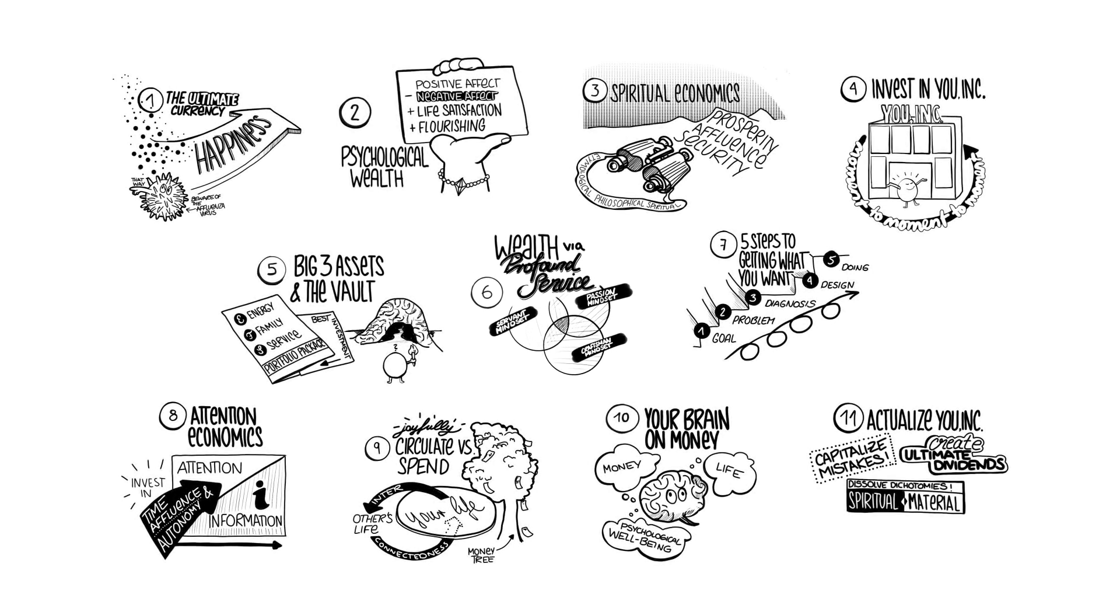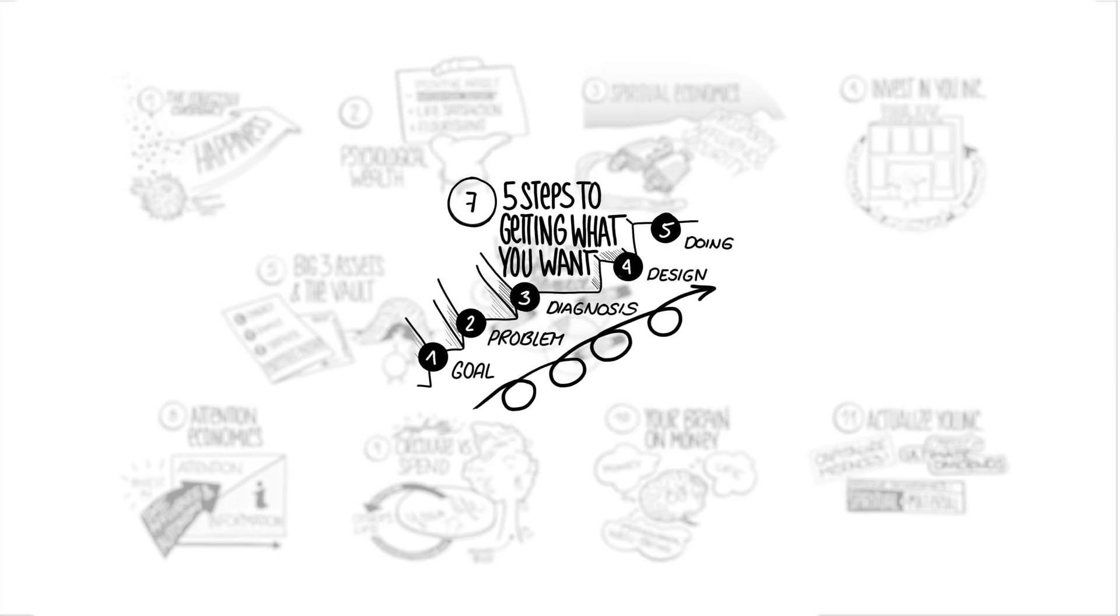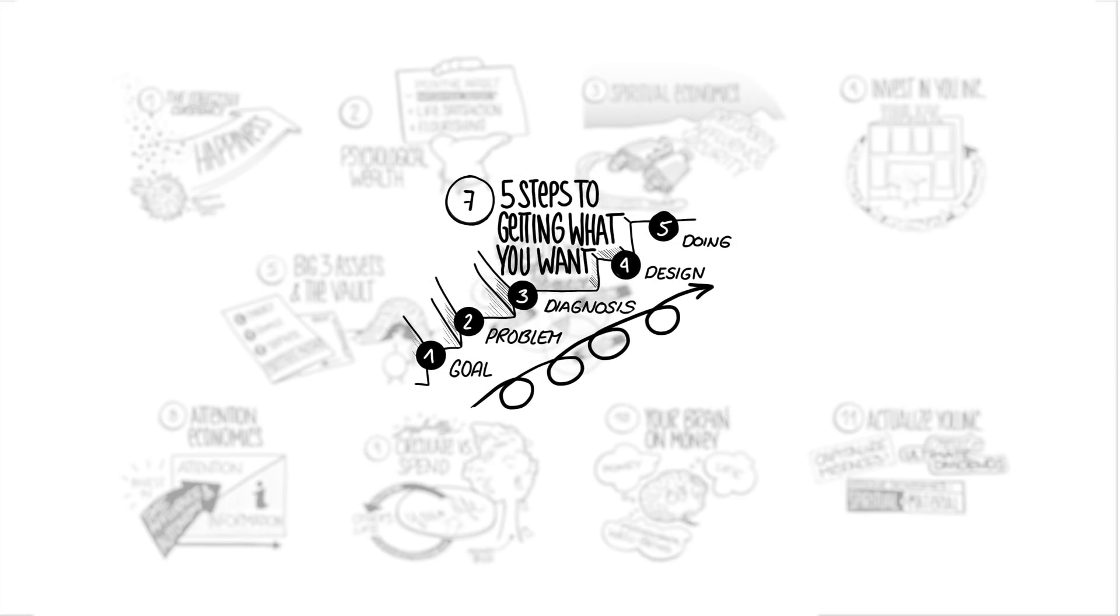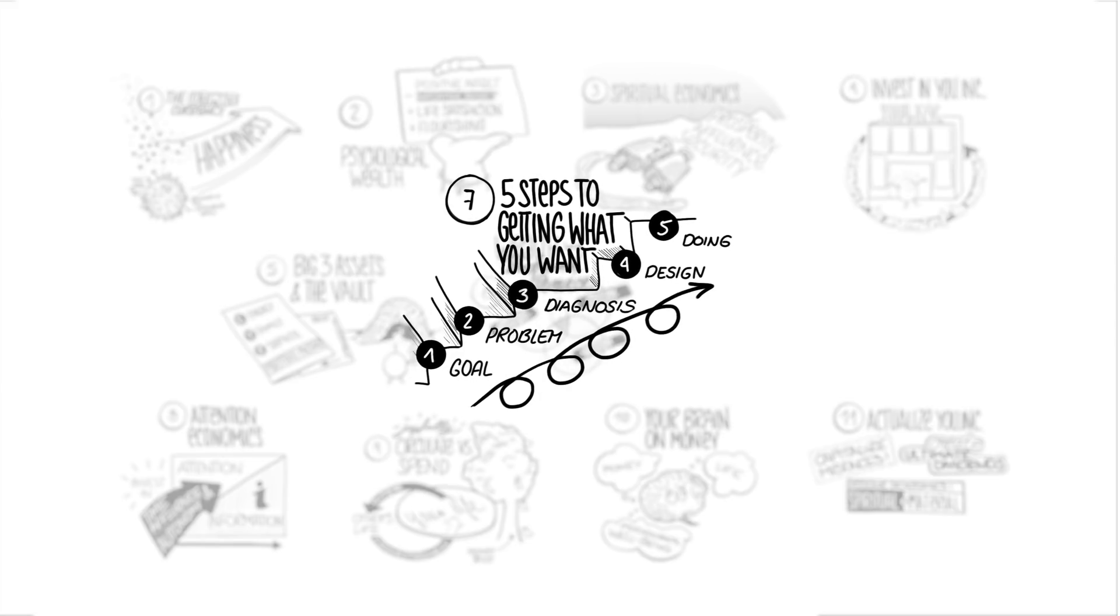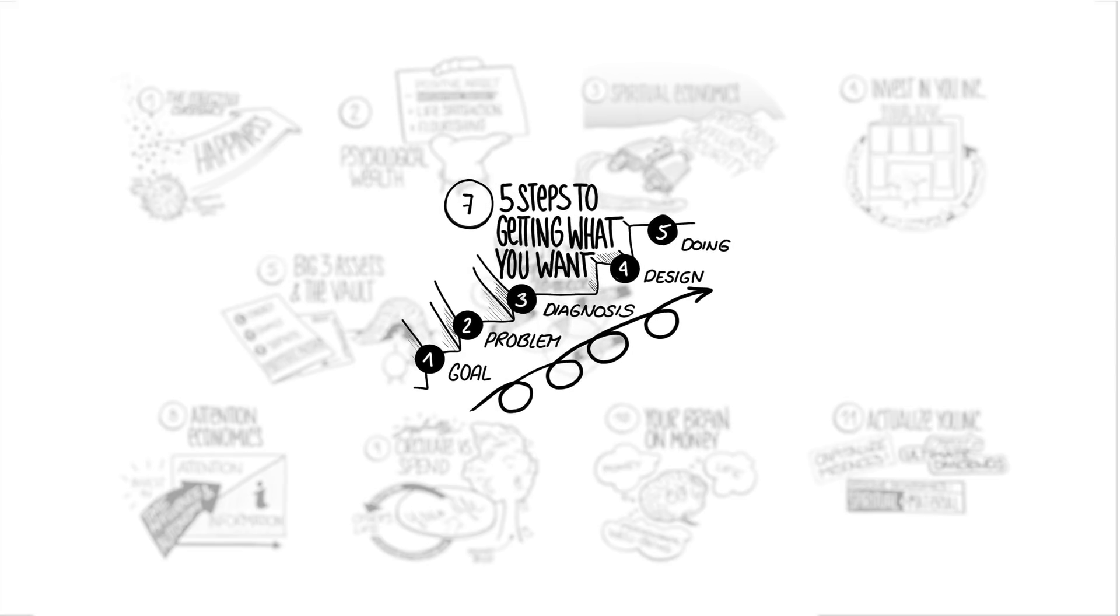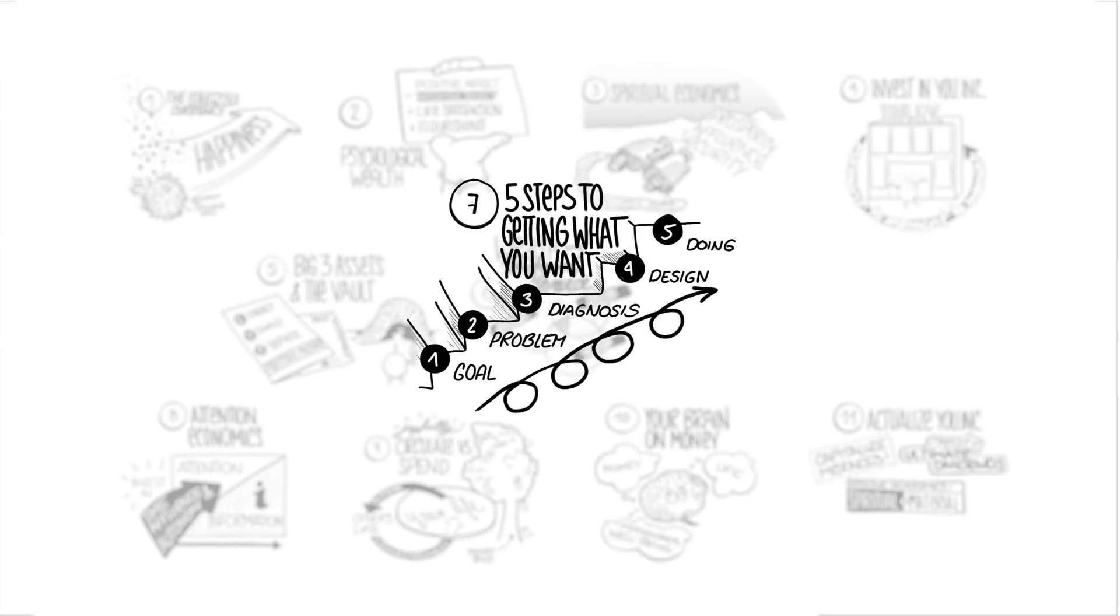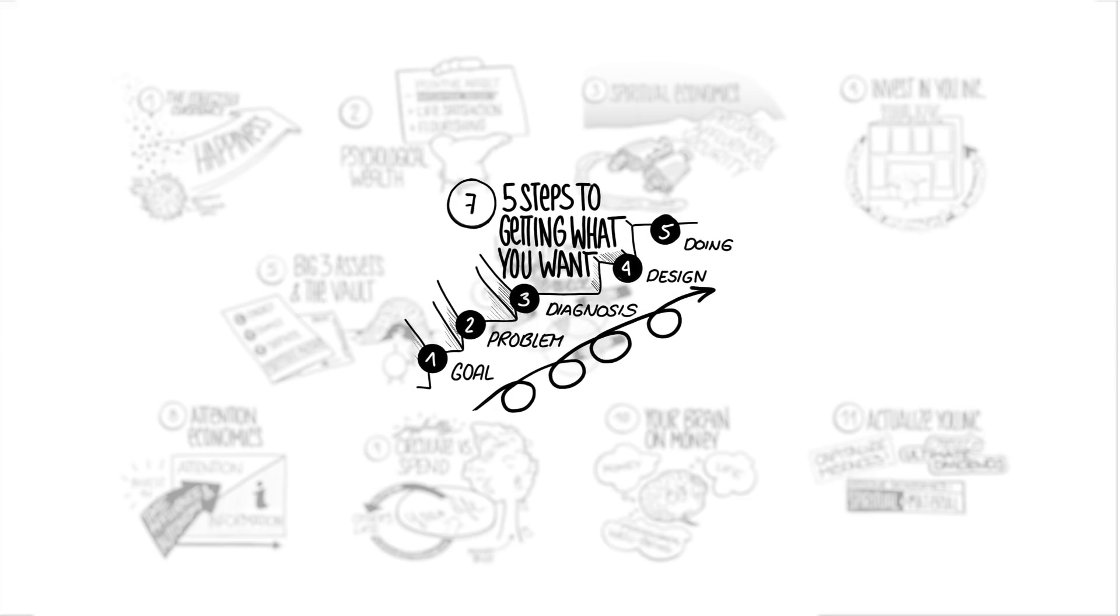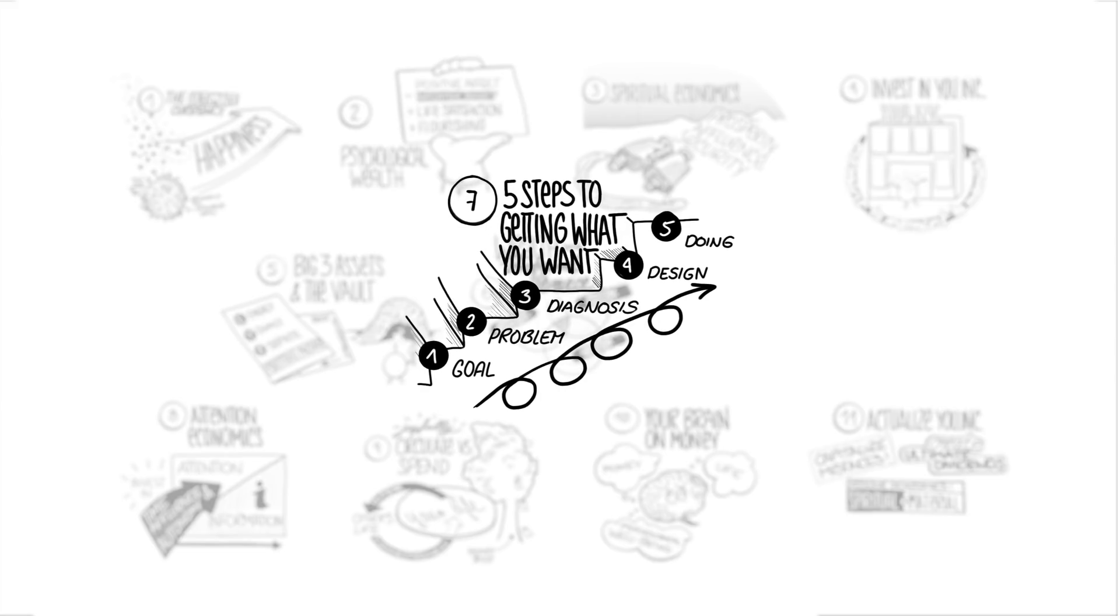Our seventh big idea is the five steps to getting what you want in life. Ray Dalio is one of the wealthiest people in the world, one of the hundred wealthiest people in the world, one of the most influential, and he runs one of the most impactful, powerful companies in the world. He has a five-step process to getting what you want in your life. We're going to walk through that, and you're going to see just how important making mistakes is to that process.